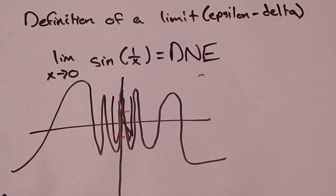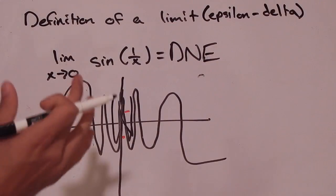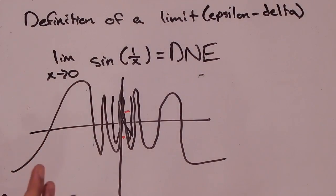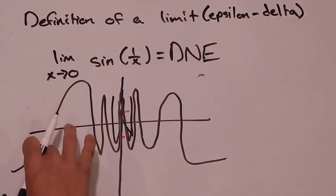What we want you to get from this video is the definition of a limit — look it over and make sure you understand it. When we say a limit exists, it means that for any epsilon value greater than 0, you can find a corresponding delta value. That sets up the intervals: when your x values are in the interval around c defined by delta, your f of x values will come out in the interval around L defined by epsilon.